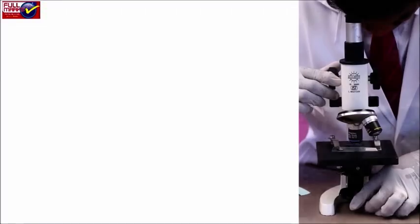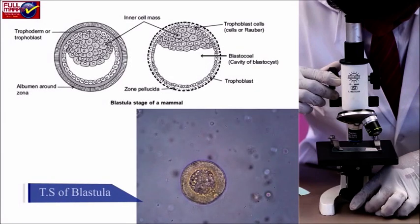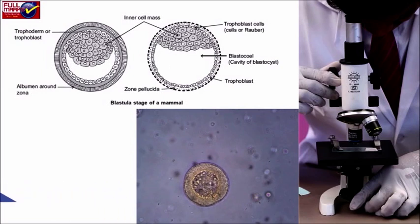Observation: In transverse section, it appears as a spherical mass of about 64 cells. It is composed of two parts.